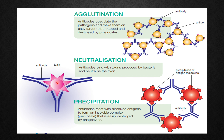The third mechanism is precipitation, where the antibodies react with the dissolved antigens to form an insoluble complex, which we call a precipitate. This again makes it easier to be destroyed by the phagocytes.